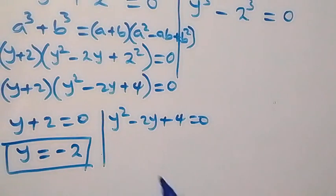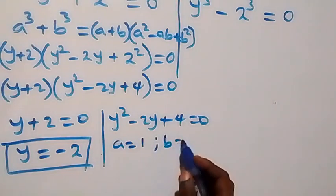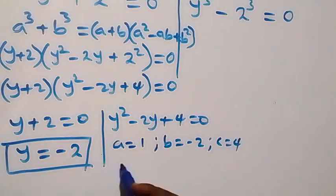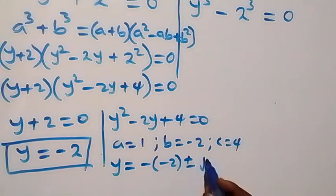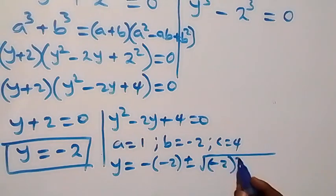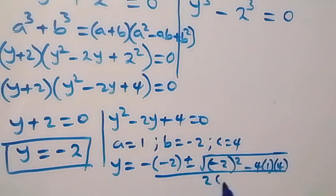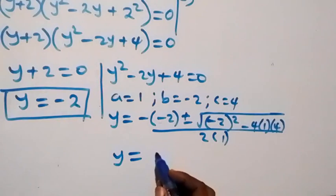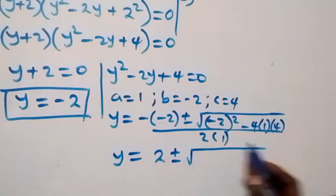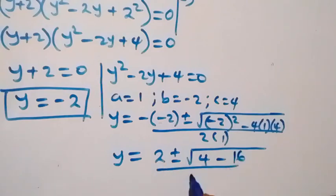For the quadratic equation y² - 2y + 4 = 0, we have a = 1, b = minus 2, and c = 4. From the quadratic formula, y equals minus b plus or minus square root of b² minus 4ac over 2a, giving y equals 2 plus or minus square root of 4 minus 16, all over 2.